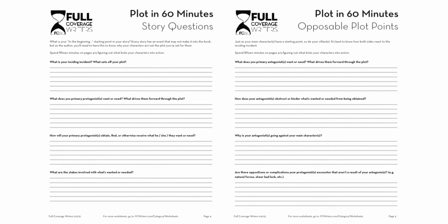The opposable plot points page — page five — covers your antagonist side. What are the bad guys doing to complicate matters? How are they going to slow down your main characters? What are their interests? Why are they going against your main characters — are they being paid, is there a grudge? Even the Joker has reasons to do what he does against Batman. Only these two pages are to be done in this segment, and you have 15 whole minutes. Set your timer for 15 minutes and go.